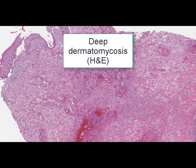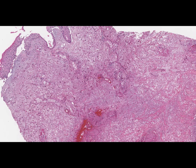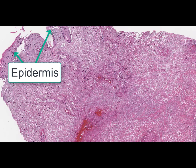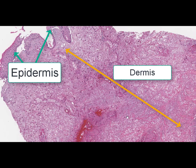On this slide we can see a histological section of the skin. The stain is hematoxylin and eosin. The name of this slide is deep dermatomycosis. It is another example of opportunistic infections found in patients suffering from immune deficiency, for example in HIV. Here it is a fungal lesion of the skin. At low magnification we can see the epidermis and dermis, which occupies the greater part of the slide.